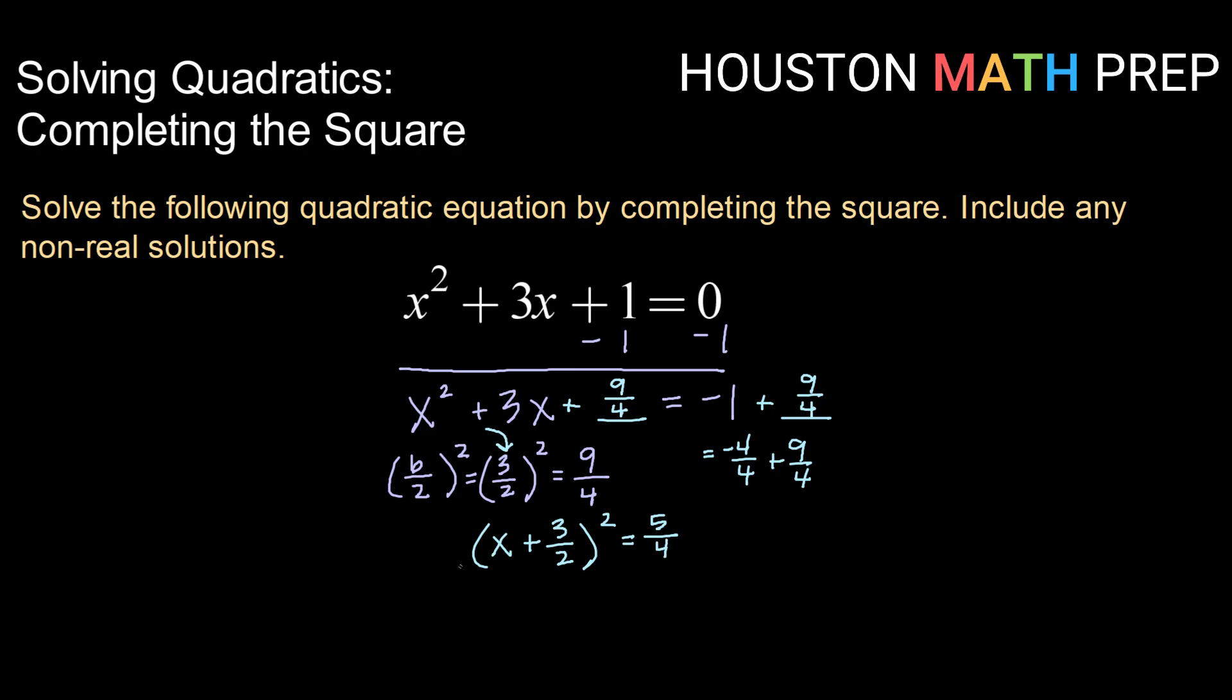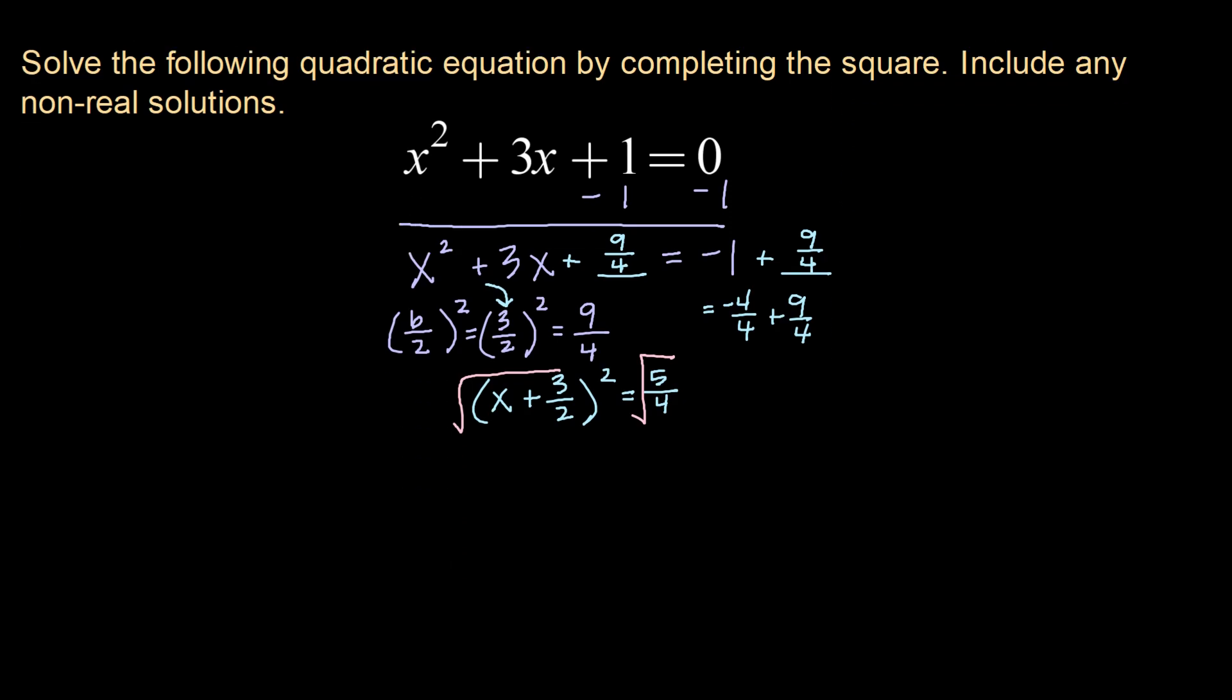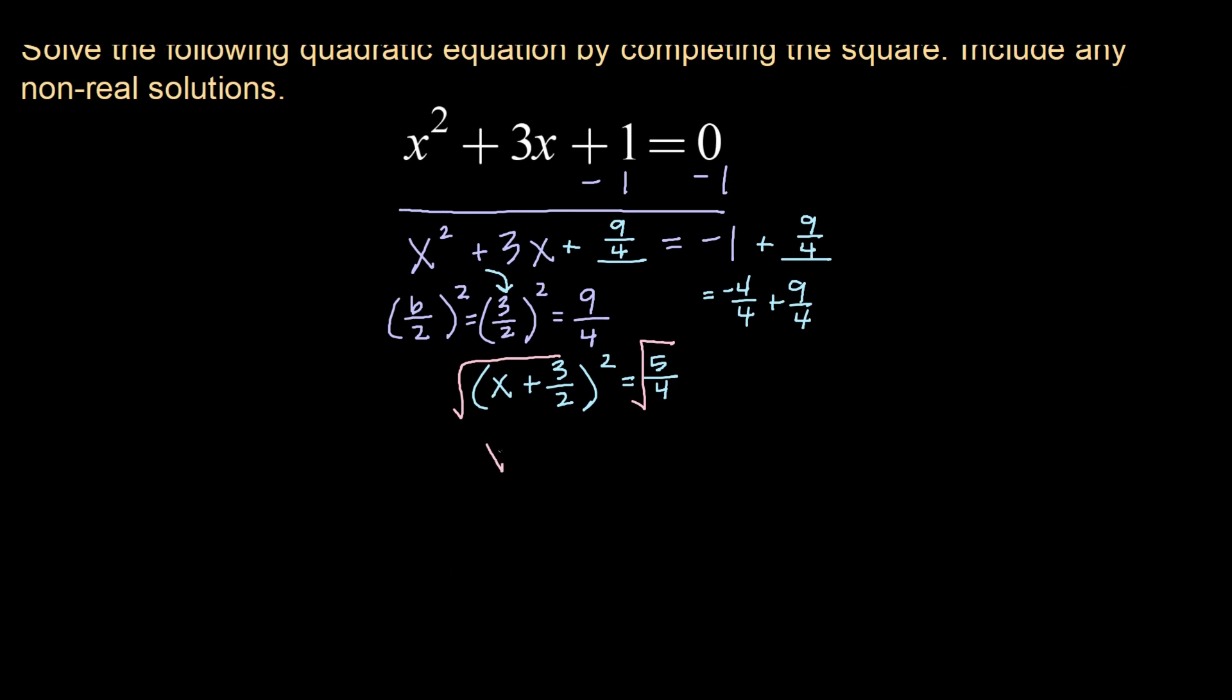Now taking the square root of both sides to get rid of our squared we get x plus 3 over 2 equals plus or minus. Don't forget you gotta take plus or minus. Square root of 5 over square root of 4 is 2. So square root of 5 over 2.